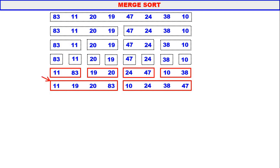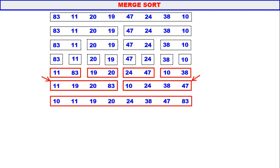Now the first part of the full array, 11, 19, 20, 83, is sorted — we sorted it. The second part, 10, 24, 38, 47, is also sorted — we sorted it. We have two sorted parts of the array. We know how to merge them, so we merge to get the fully sorted array.